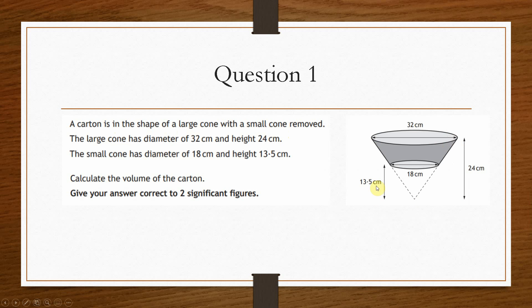Now we have a smaller cone, which is this cone here. It's not this part up here, it's this section down here. And this has a diameter of 18 centimetres, and it only has a height of 13.5 centimetres. We want to calculate the volume of the carton. So that means, and we have to give our answer to two significant figures.